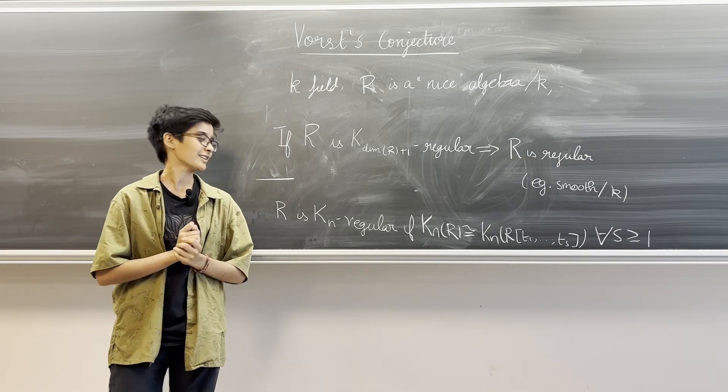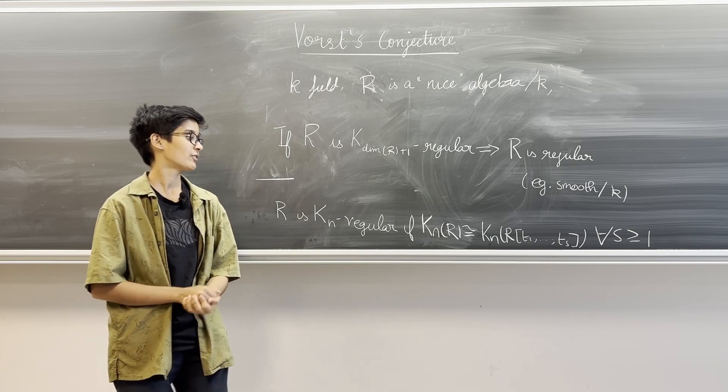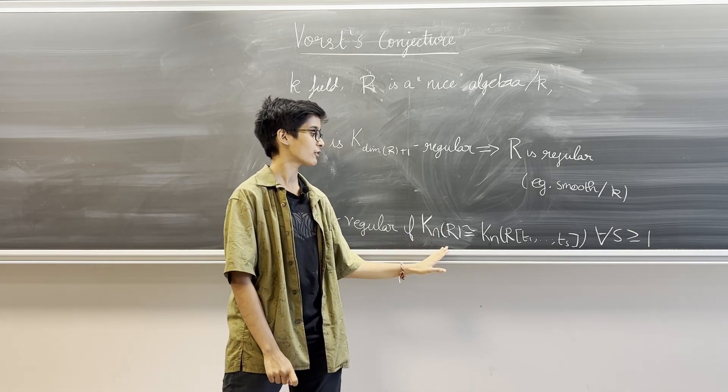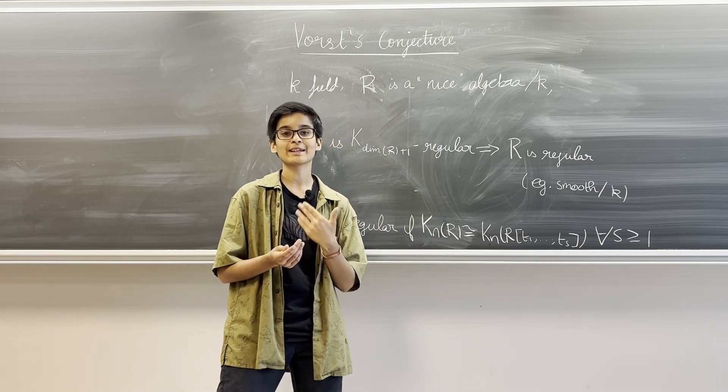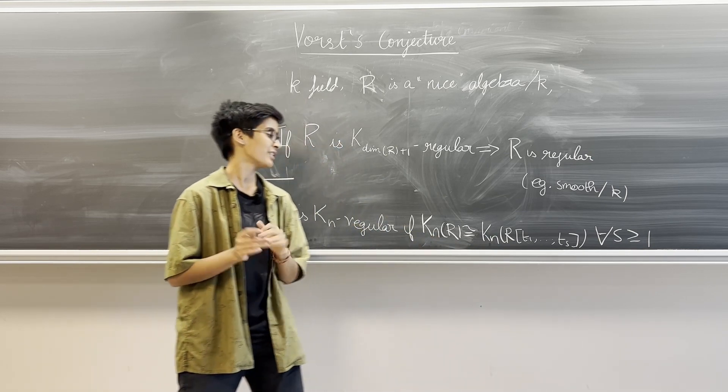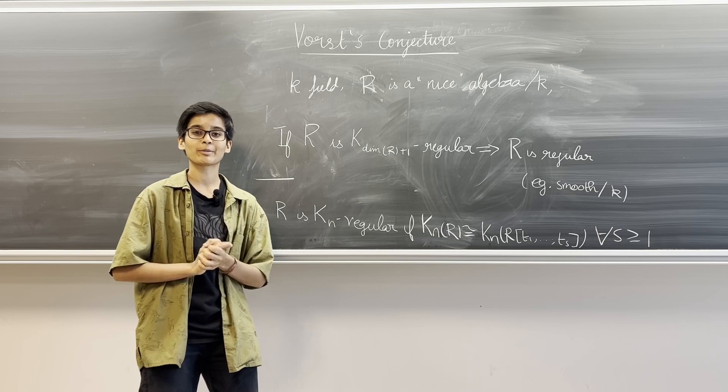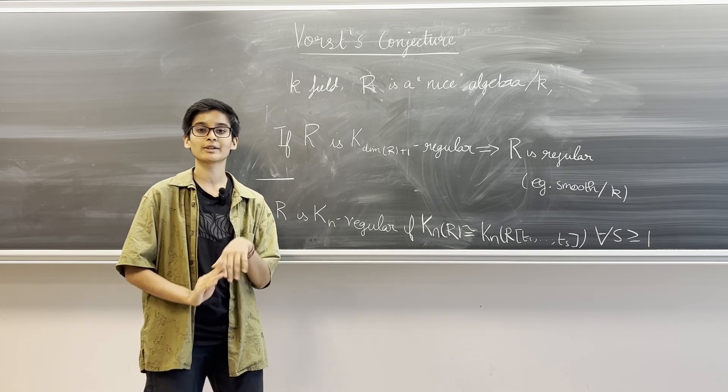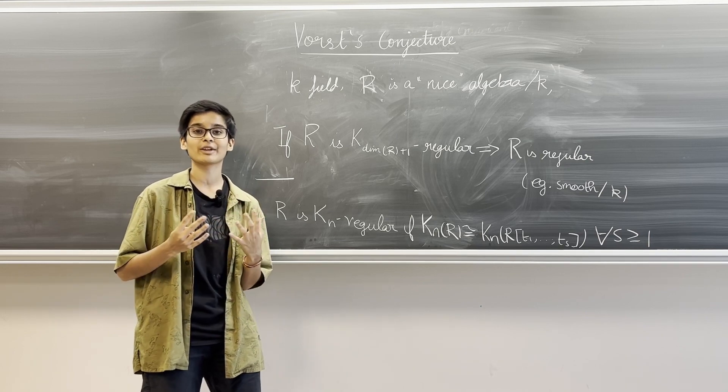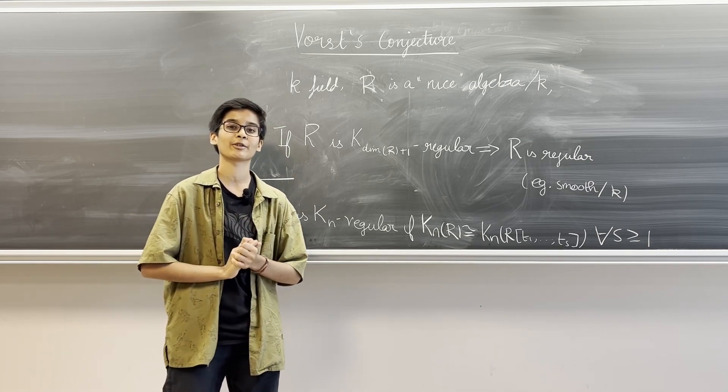To understand the statement we need to understand what Kₙ regularity is. A commutative ring R is said to be Kₙ regular if we have this isomorphism between Kₙ of R to Kₙ of R[T₁, ..., Tₛ] for every s greater than or equal to 1. Here we can see that this is a stronger requirement than A1 homotopy invariance because we don't just consider polynomials in one variable but many variables for every s greater than or equal to 1.